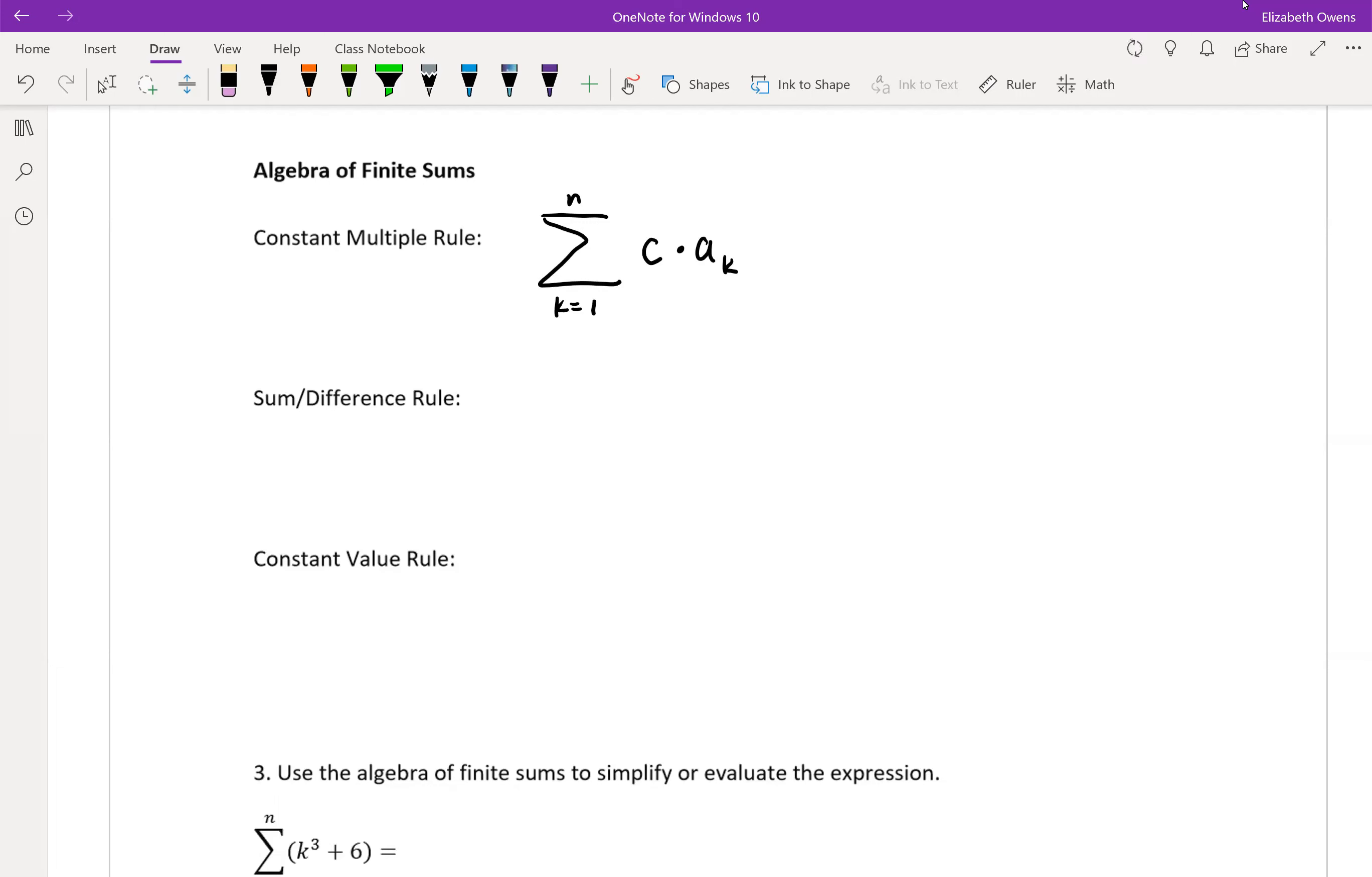If you have a summation that contains a constant multiplying your formula, like c, a constant times a sub k, where this part is going to change based on your index k, and the constant does not change based on k.